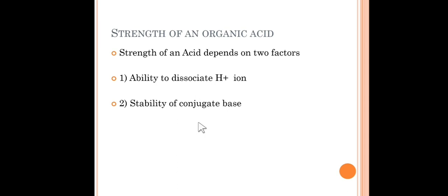As we discussed in my previous lecture, the strength of an acid depends on two factors: its ability to dissociate H⁺ ions, and the stability of the conjugate base after dissociation. These two factors have been studied according to inductive effect, mesomeric effect, and hydrogen bonding. In today's lecture, we will take some questions and answers on the strength of acids and these three structural effects.